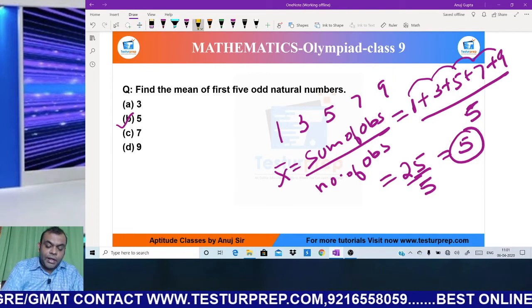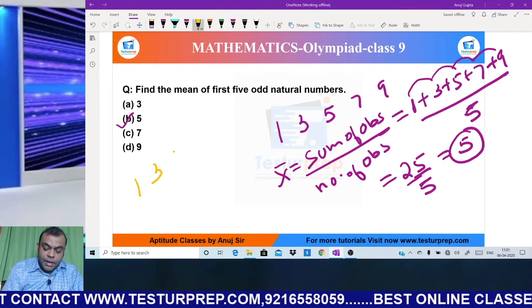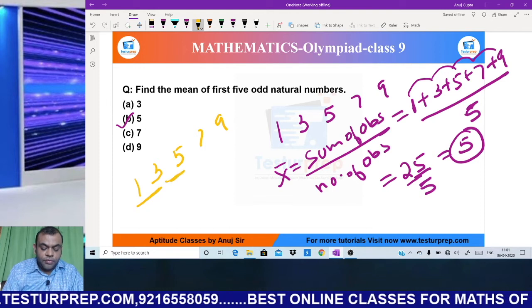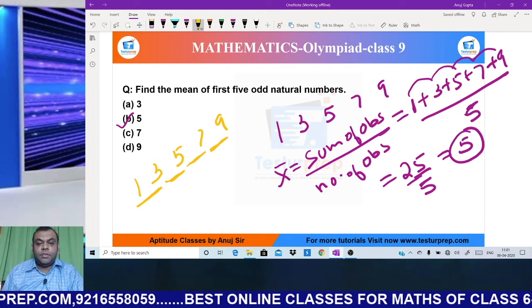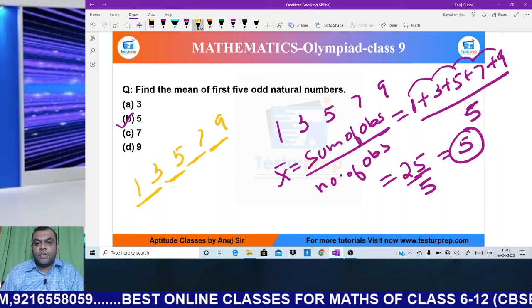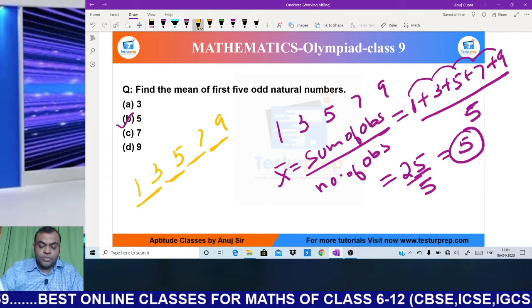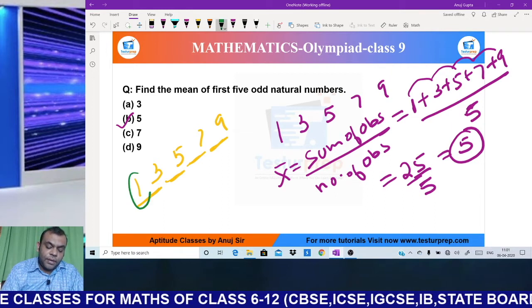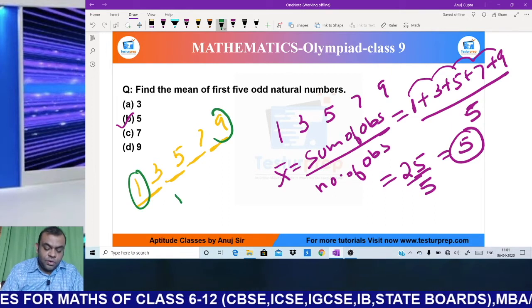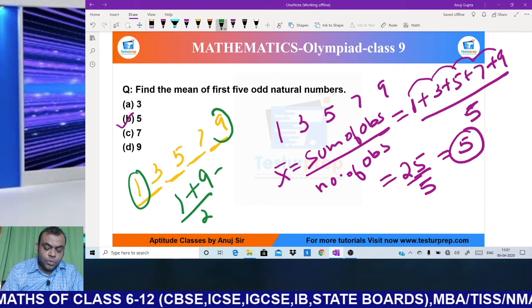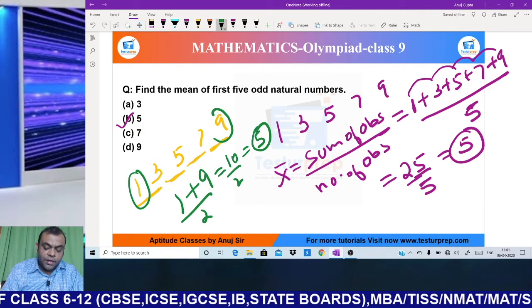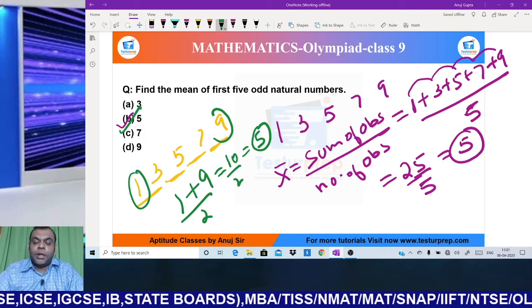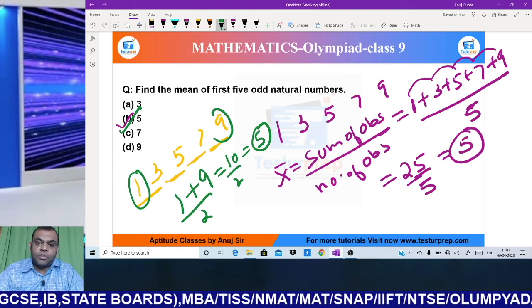But you can do this question more smartly. See, in this sequence the common difference is the same: 3-1, 5-3, 7-5, 9-7 - the difference between next term and previous term is always 2. When the difference is same throughout, you can use: (first value + last value) ÷ 2 = (1+9) ÷ 2 = 10/2 = 5, which is again option B.